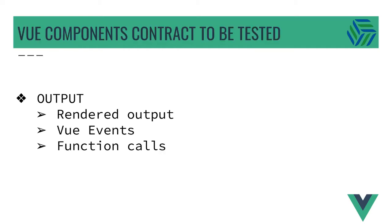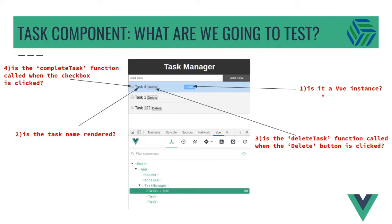The output of a component could be rendered output, which is a combination of DOM nodes and Vue instances. Vue events — if a component dispatches an event, that's a form of output. And function calls — if a component triggers some action by calling a function, that's another form of output. We are going to test if our component is a Vue instance, if the task name is rendered, if the delete task function is called when we press the delete button, and if the complete task function is called when the checkbox is clicked.